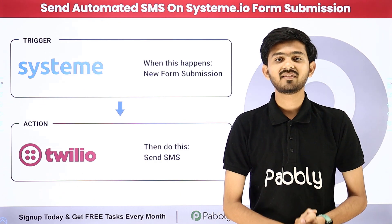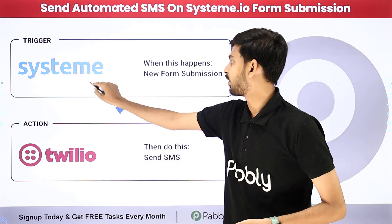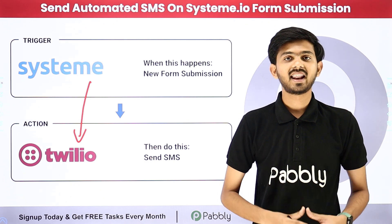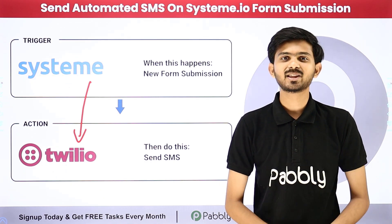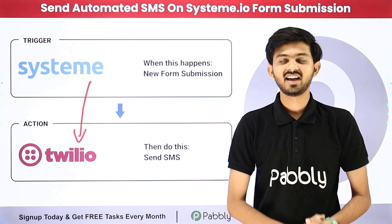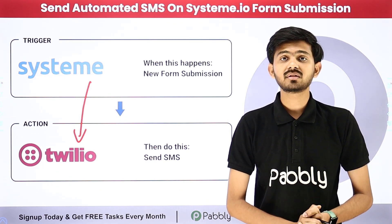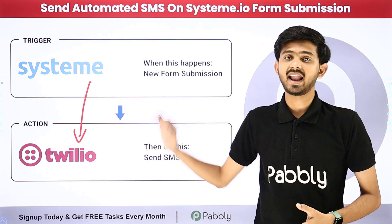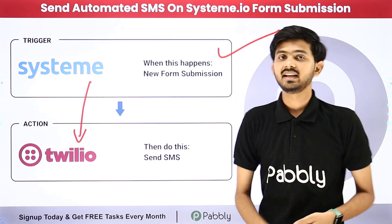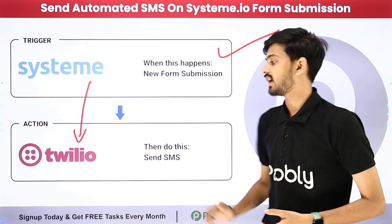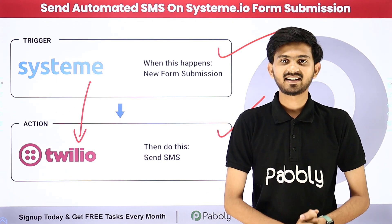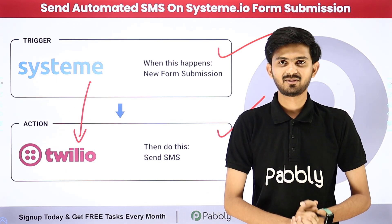To build a connection between Systema.io and Twilio, I'm going to use Pabbly Connect, which is an amazing software for automation and integration. In Pabbly Connect I need to use the concept of trigger and action — in the trigger application I'm going to use Systema.io, and in the action application I'm going to use Twilio. Let me take you to my computer screen.